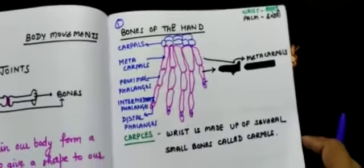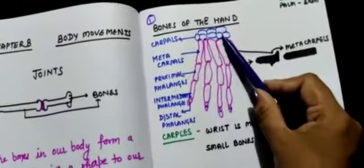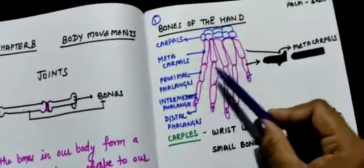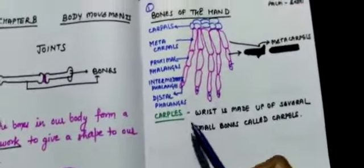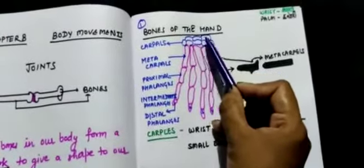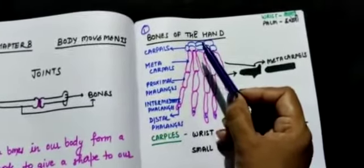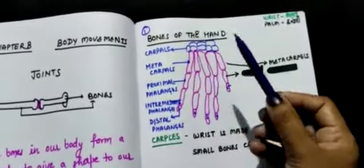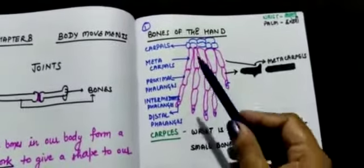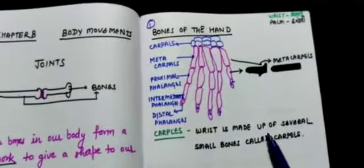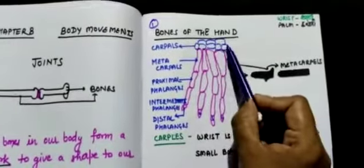Here are the bones of the hand. The wrist — where you put your watch — is made up of several small bones called carpals. These small bones are known as carpals.